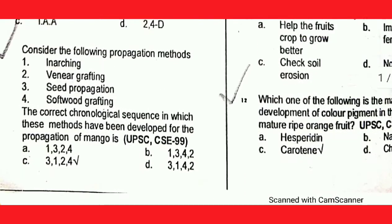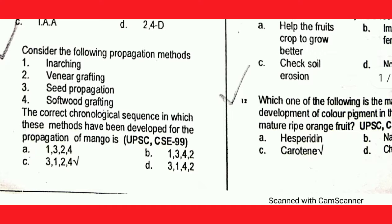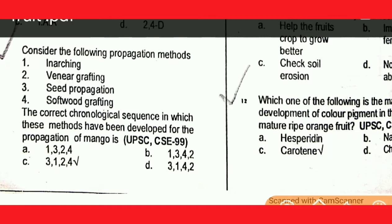Next question: consider the following propagation methods — air layering, cutting, grafting, seed. The propagation methods arranged in the correct sequence is: grafting, air layering, cutting, seed. The sequence is 3, 1, 2, 4 — option C.